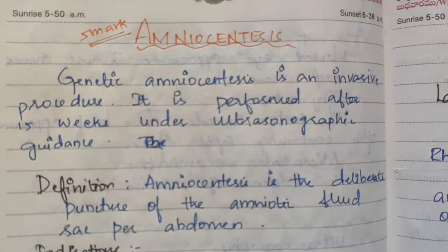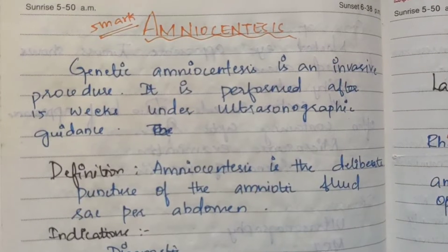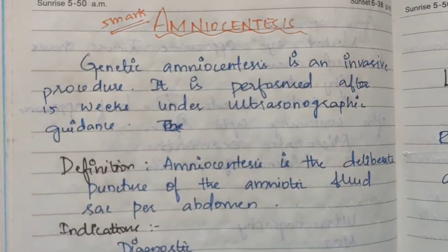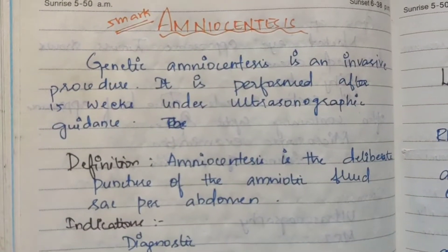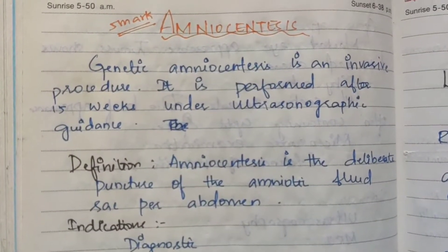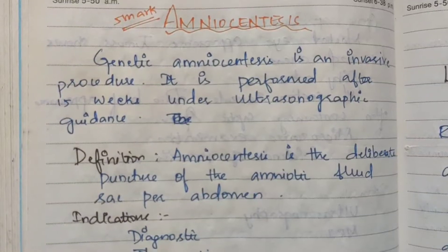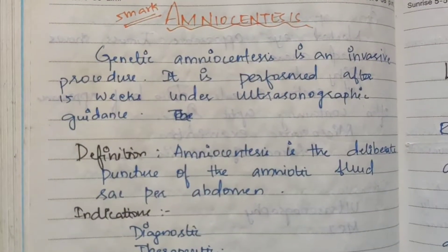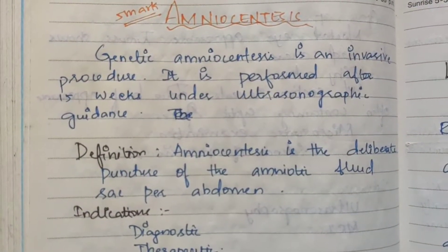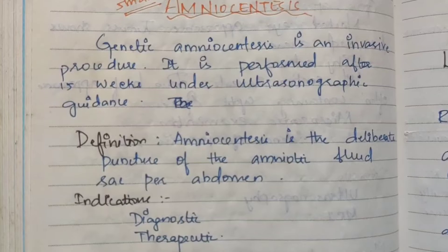Now we will talk about amniocentesis. This is an important exam question. Introduction: genetic amniocentesis is an invasive procedure. It is performed after 15 weeks under ultrasonographic guidance. It invades the body by cutting or puncturing using any instrument — a cut, insert, puncture procedure. Ultrasonographic guidance, that is a scan procedure, is performed with the pregnant patient at 15 weeks.